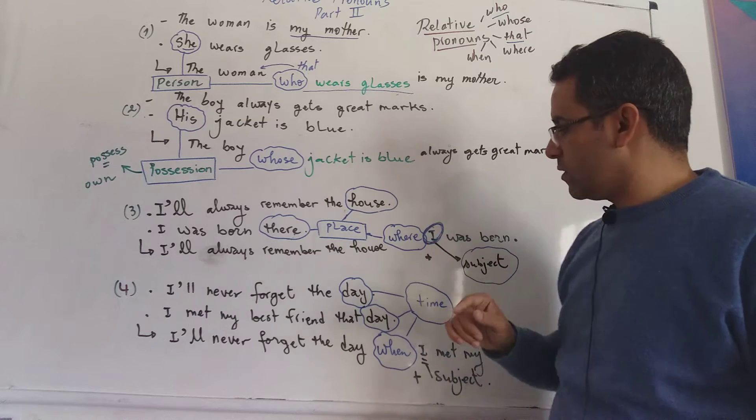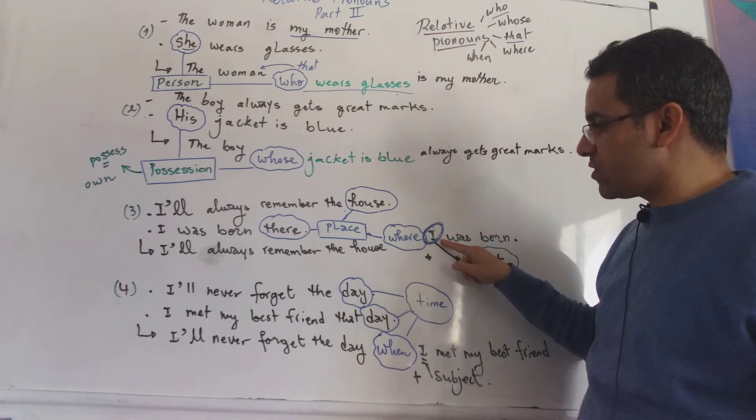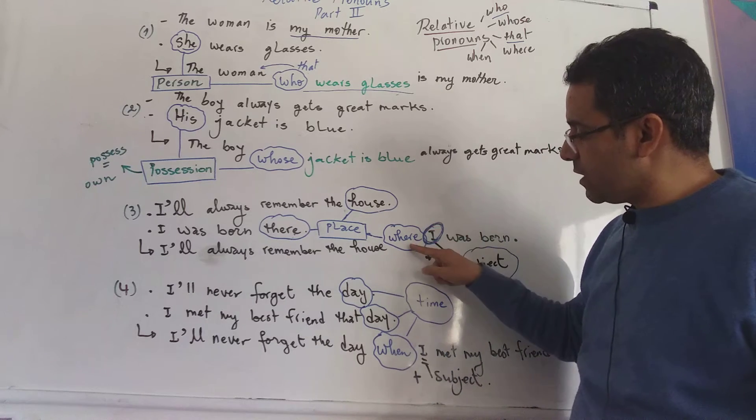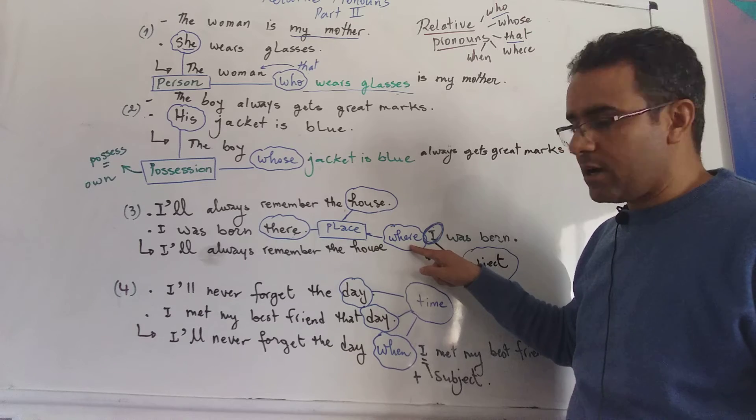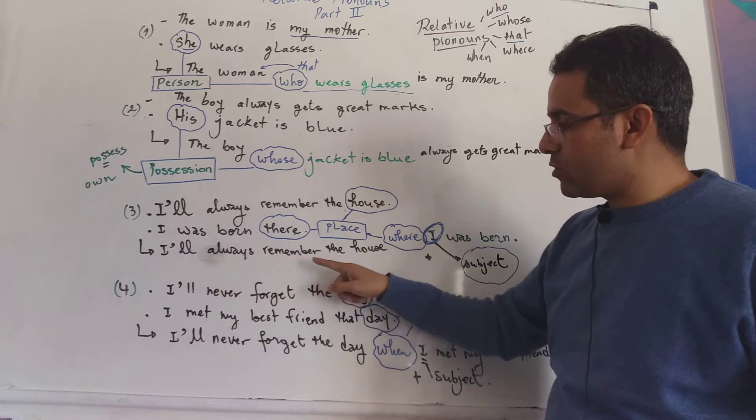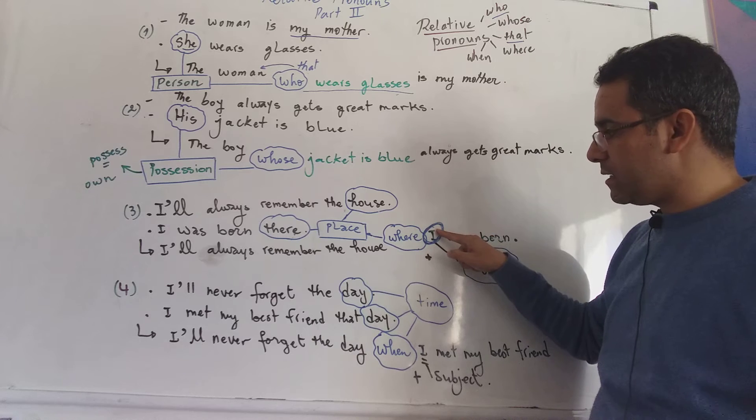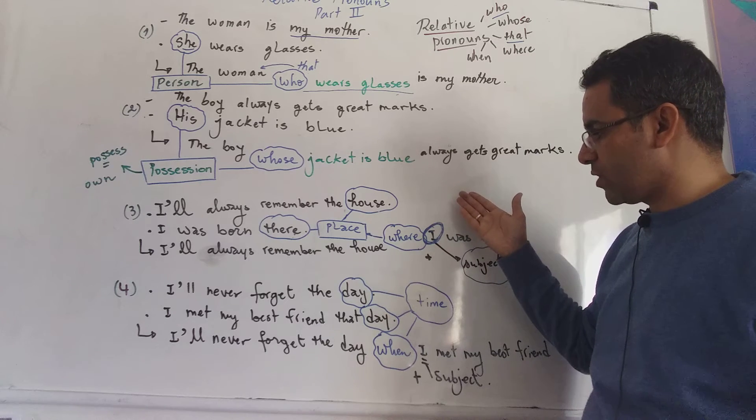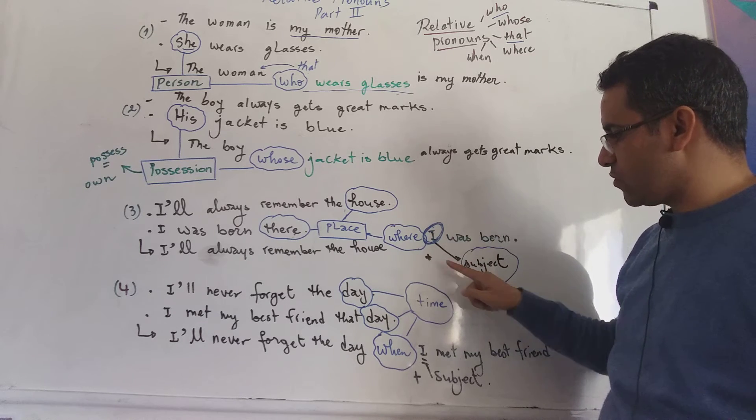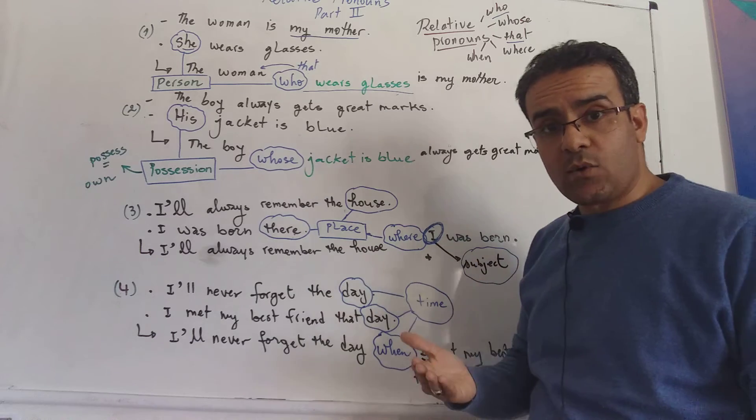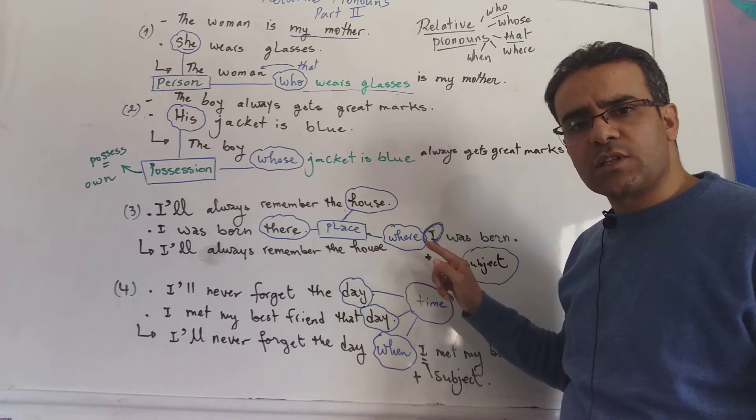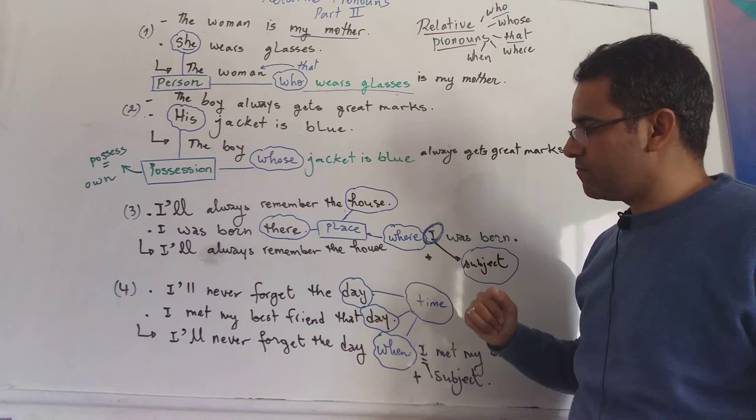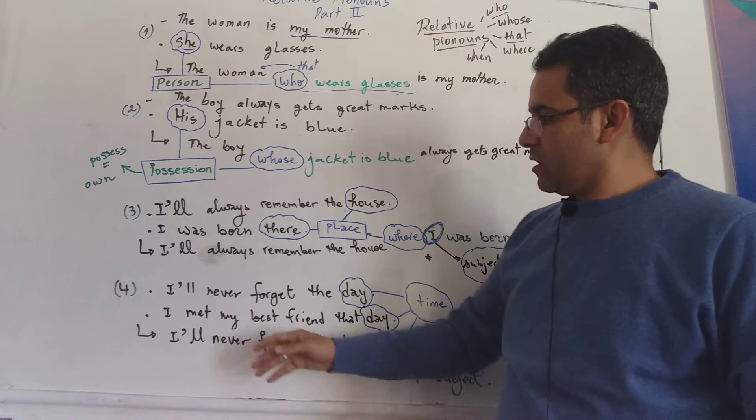Be careful though, that we need here to use a subject right after the word where. So, I'll always remember the house where I, or it can be any other subject. So remember this, where plus a subject. Otherwise, if we don't have the subject here, we're going to say which.